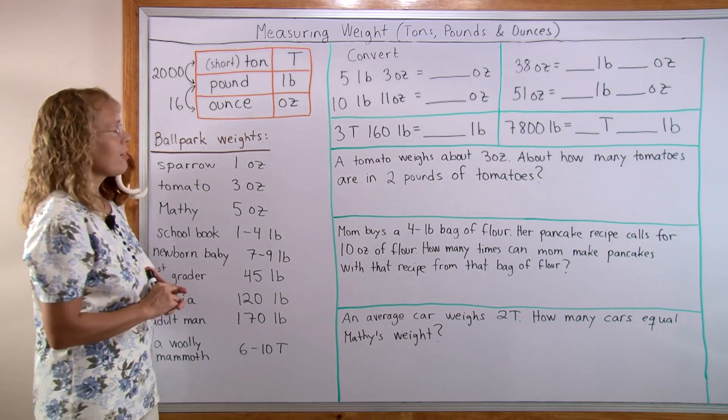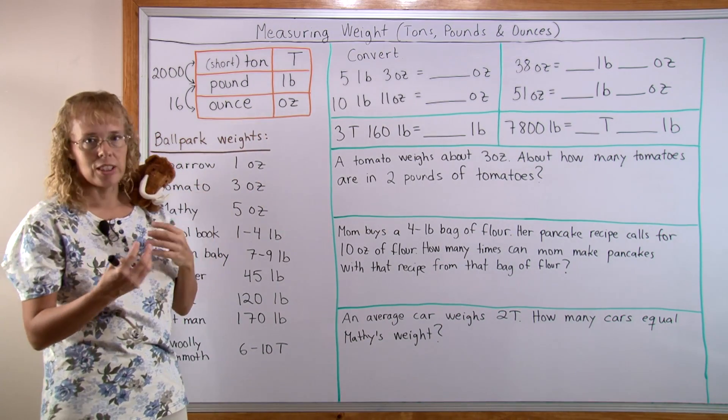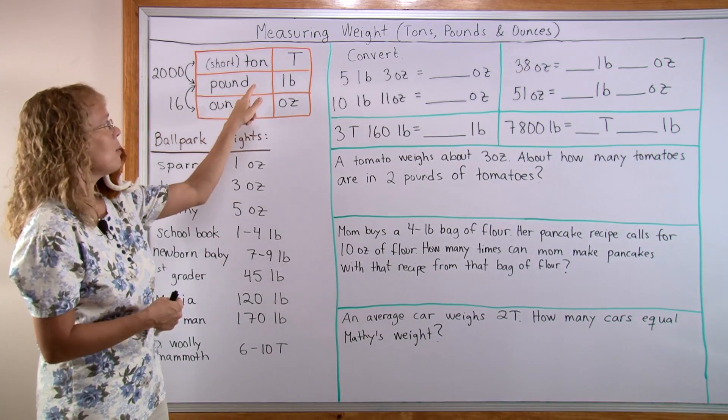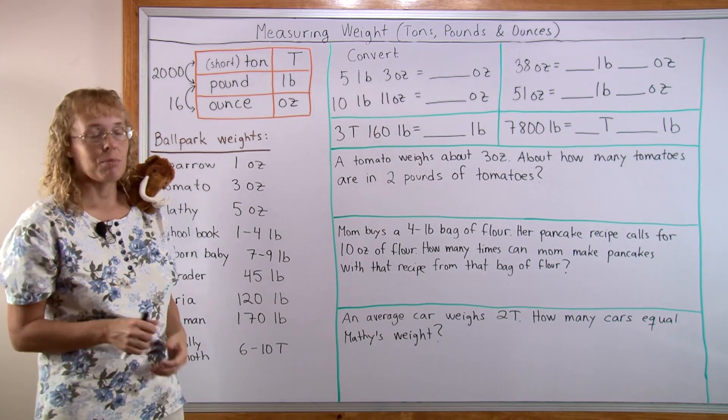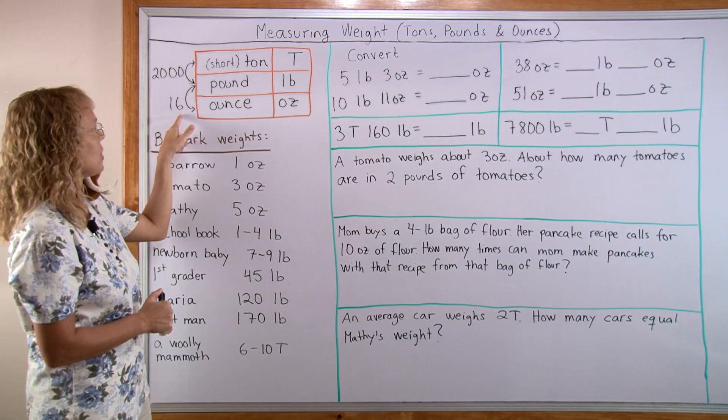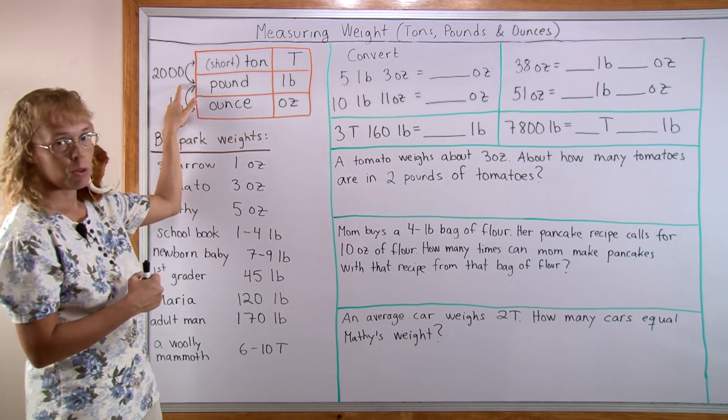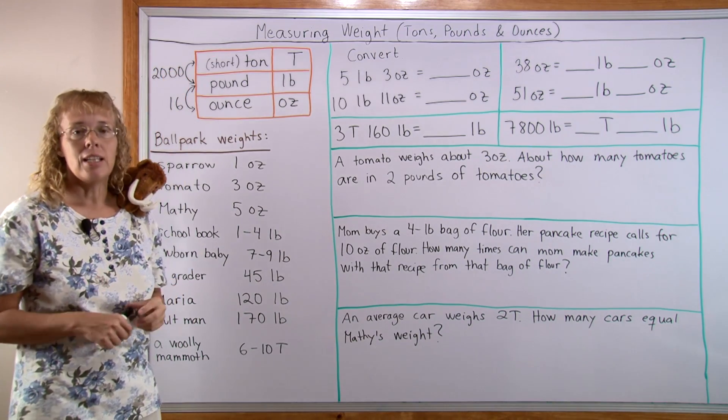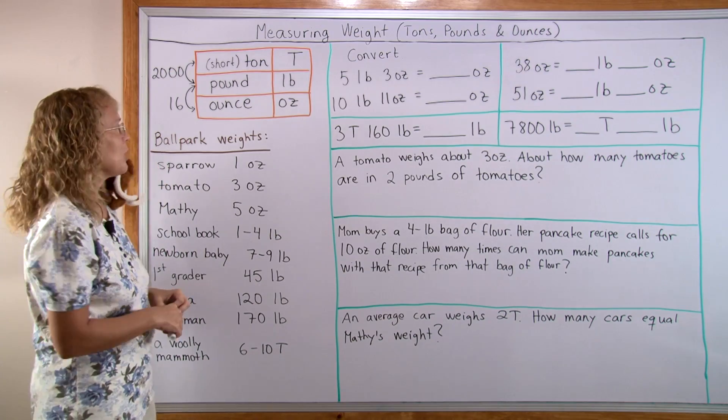I wrote here the three units we use in the customary system: ounces for measuring small weights, pounds, and tons for very heavy things like cars. These are the conversion factors: 16 ounces makes a pound and 2,000 pounds makes a ton. It's called a short ton to distinguish it from the metric ton.